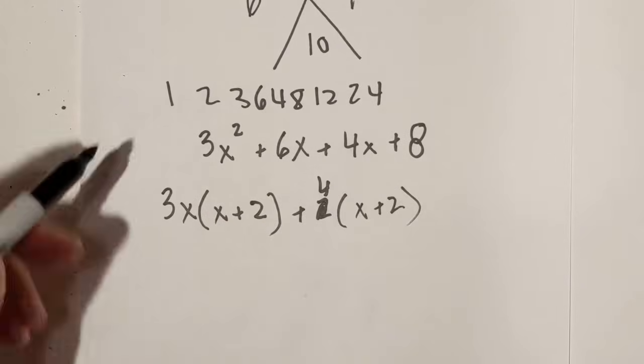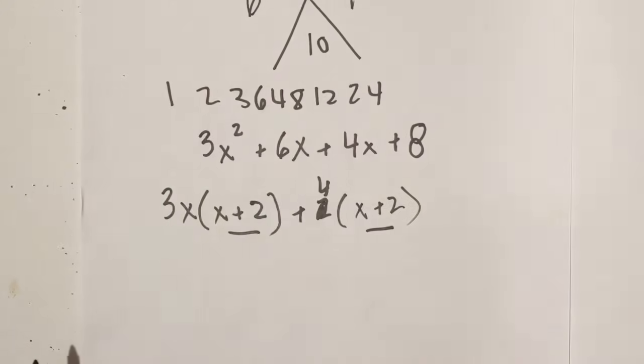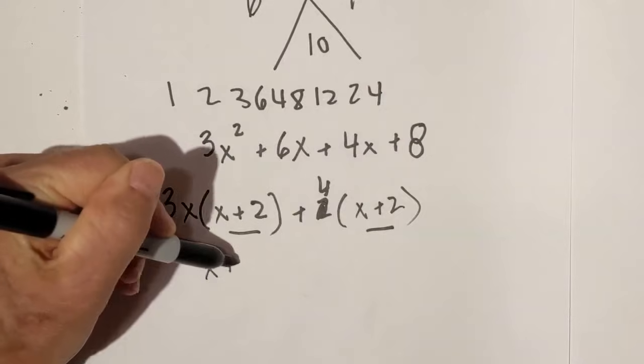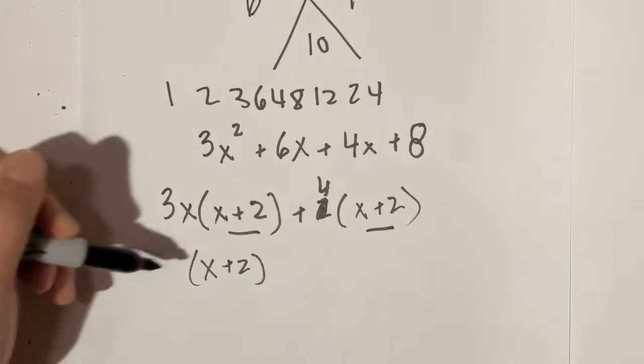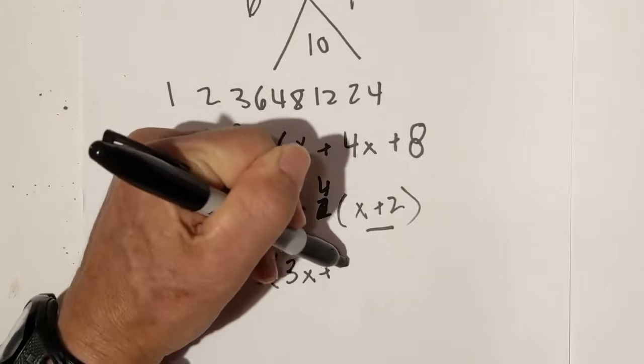So now we just rewrite the common binomial, and that is x plus 2 and 3x plus 4. So there's example number one.